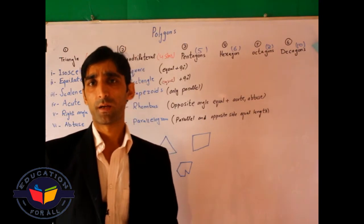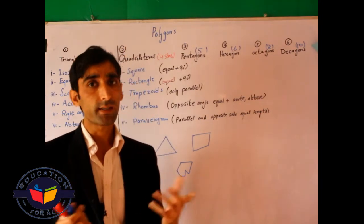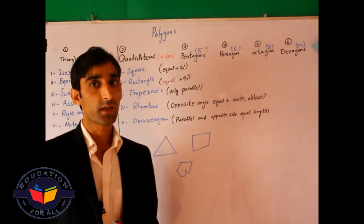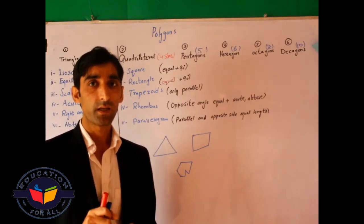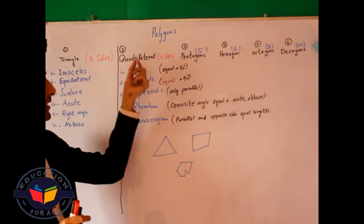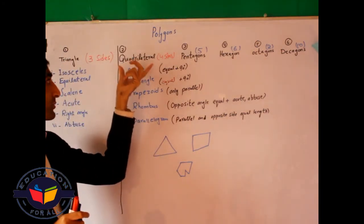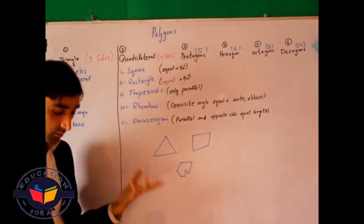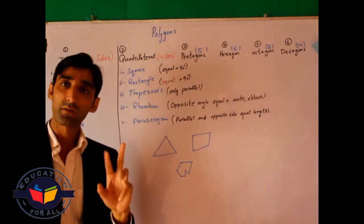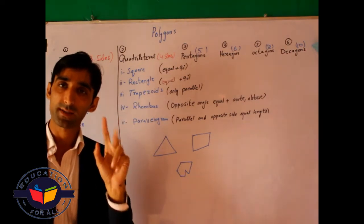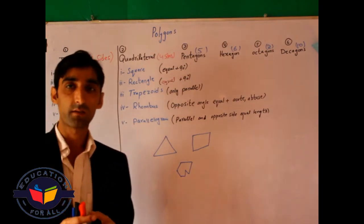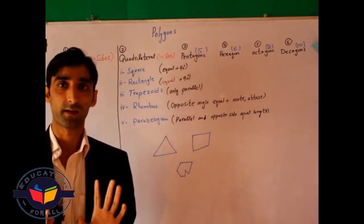Another question: what is meant by a regular pentagon? When we use the word 'regular,' it means all its sides are equal. For example, a regular quadrilateral is a closed figure which has all four sides equal. Similarly, a triangle in which all three sides are equal is a regular triangle.